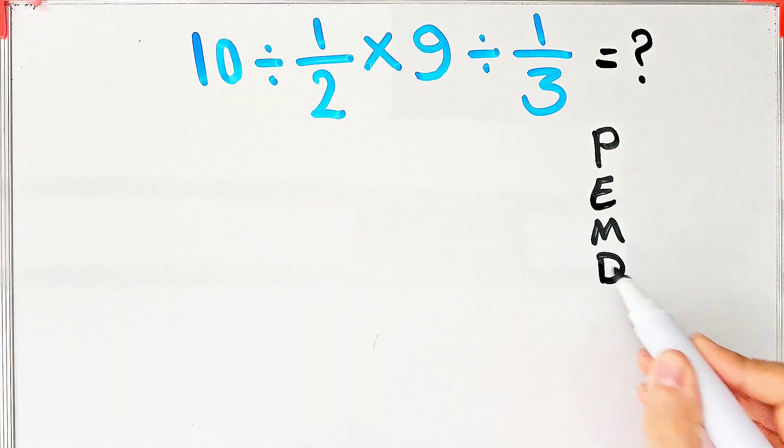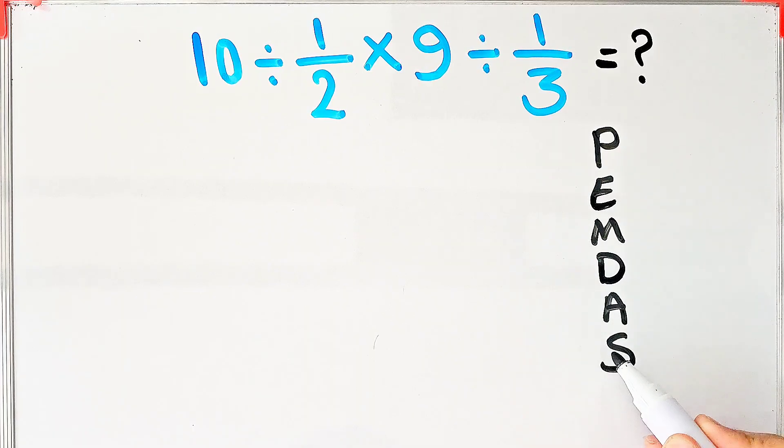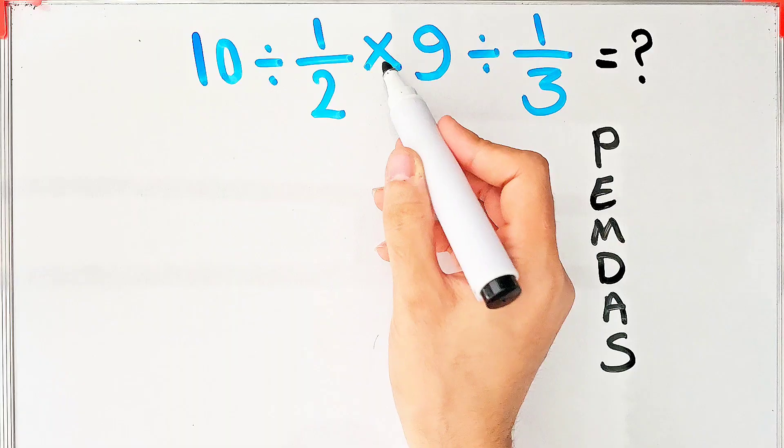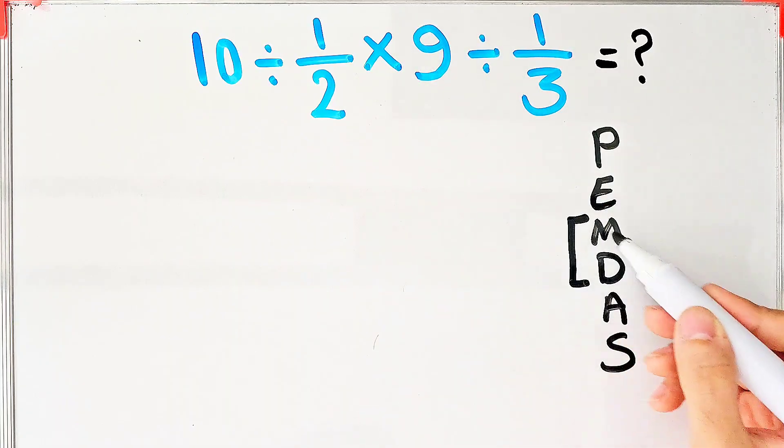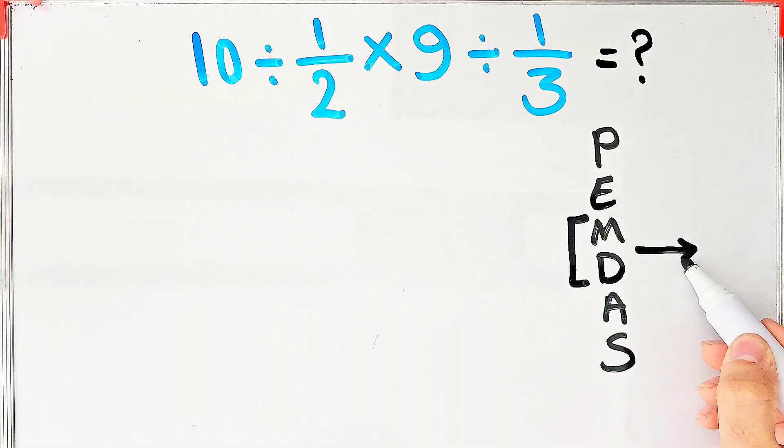Order of operations, which is PEMDAS. PEMDAS shows the priority of the mathematical operations. According to this rule, multiplication and division have the same level of priority. When we have both, we start from the left and simplify.